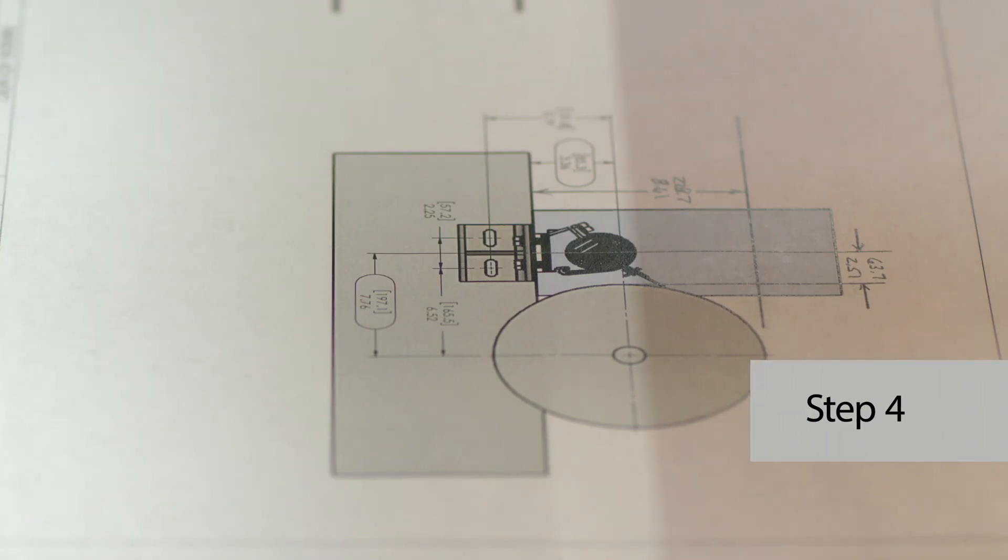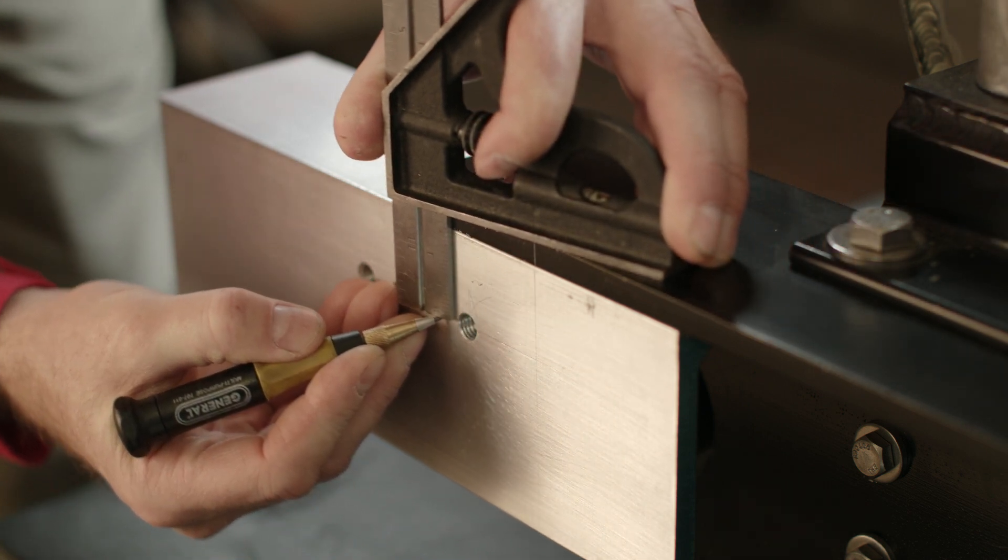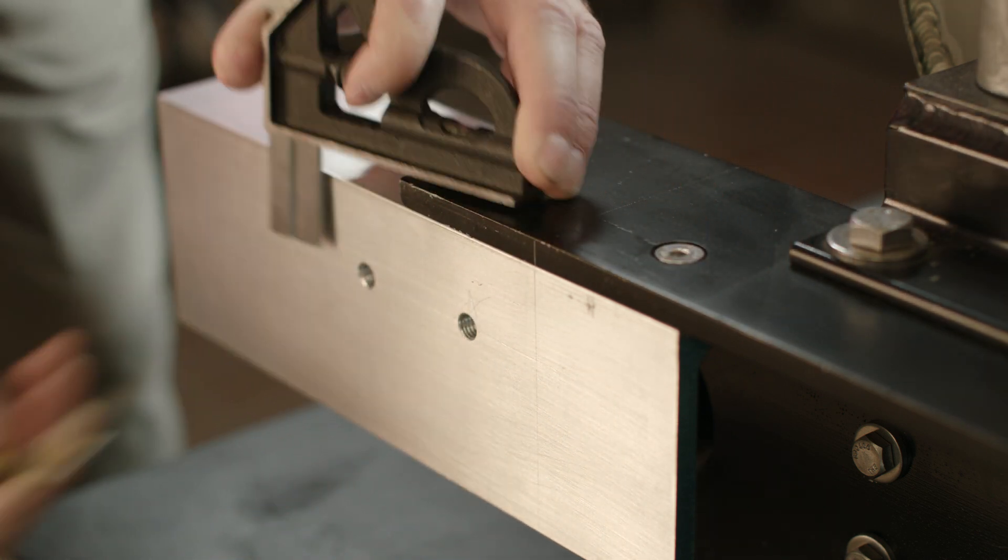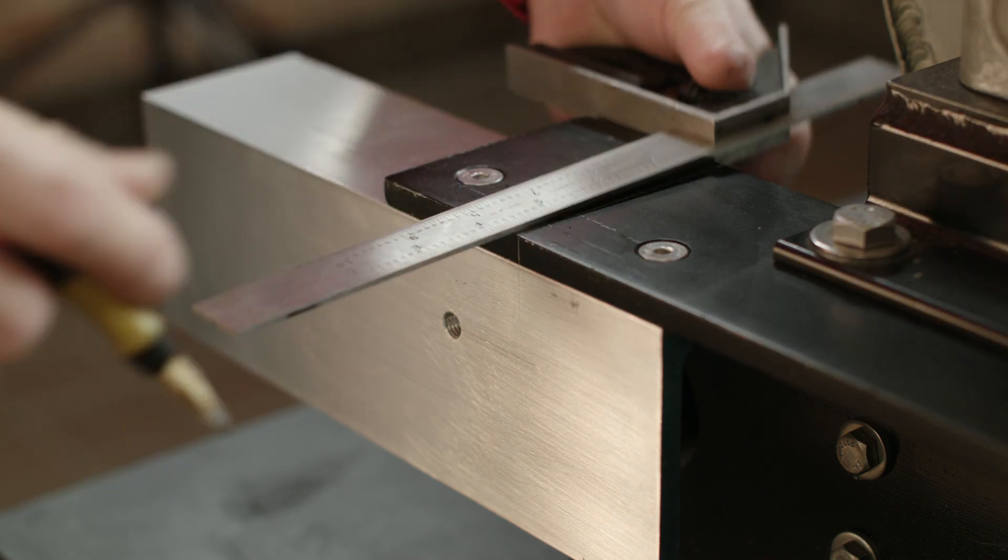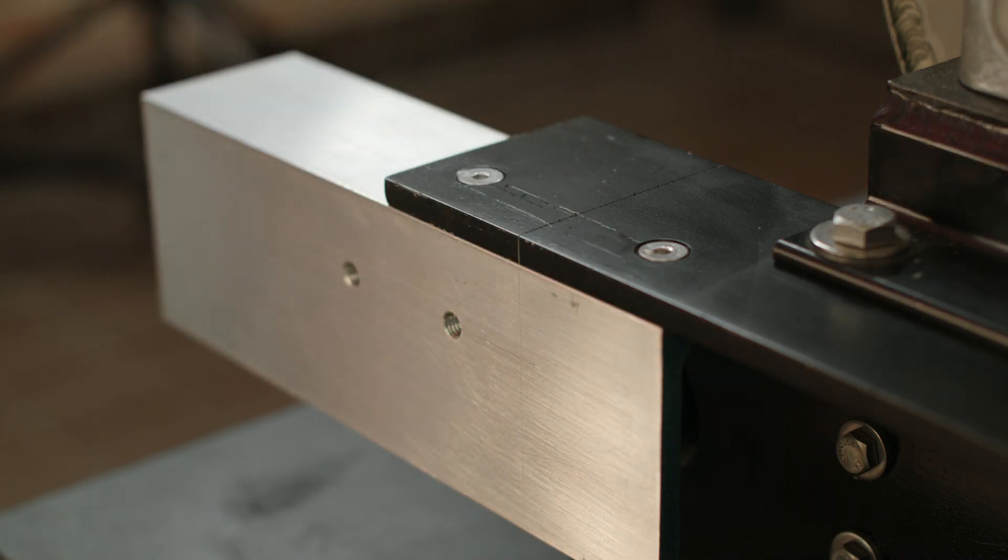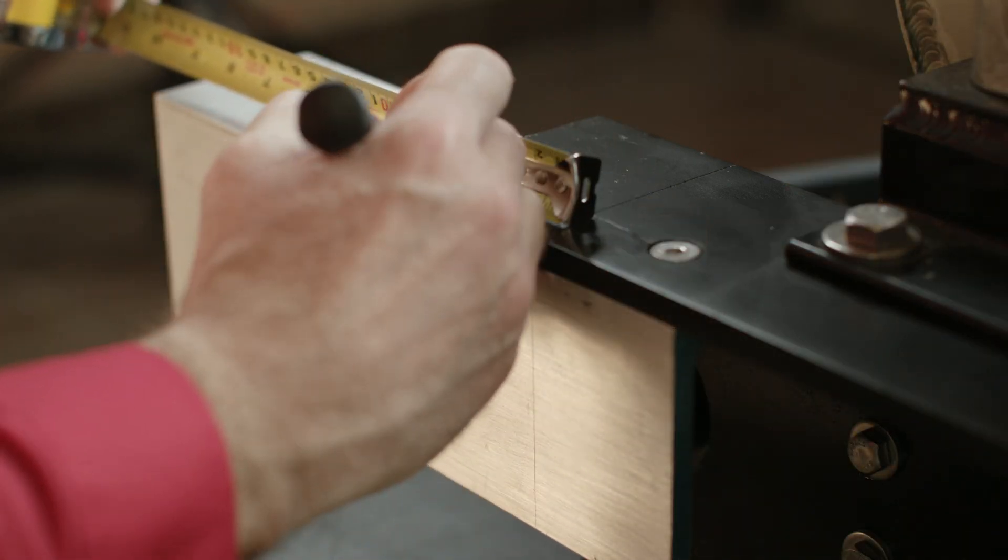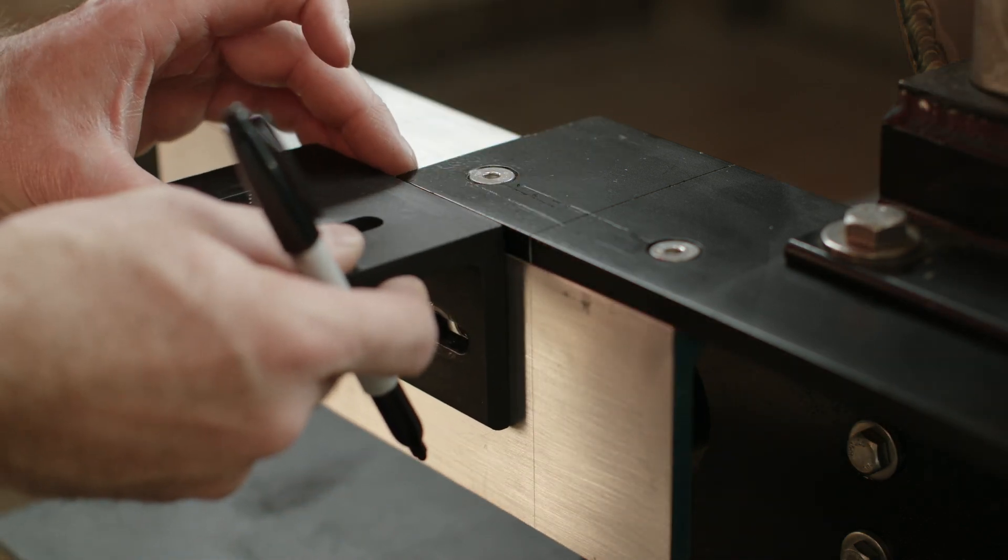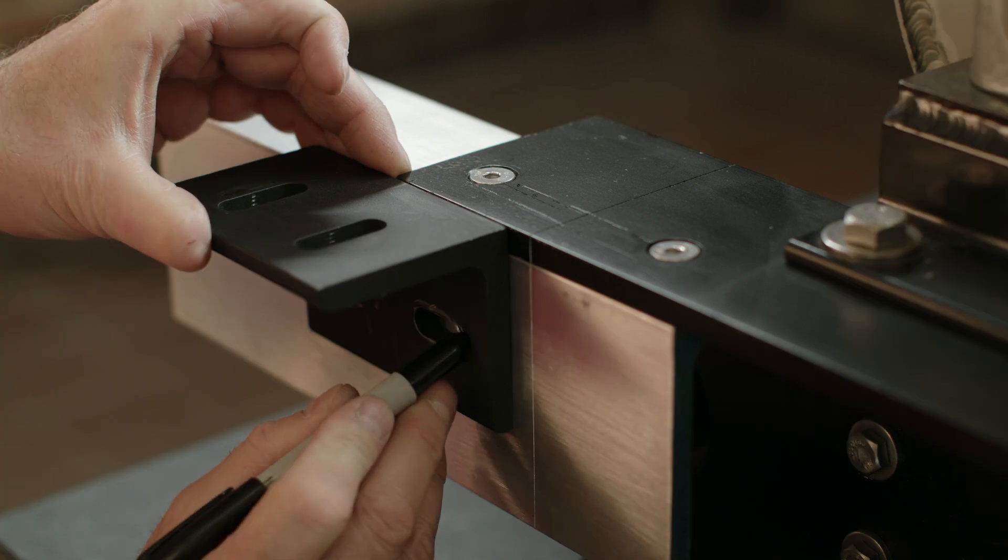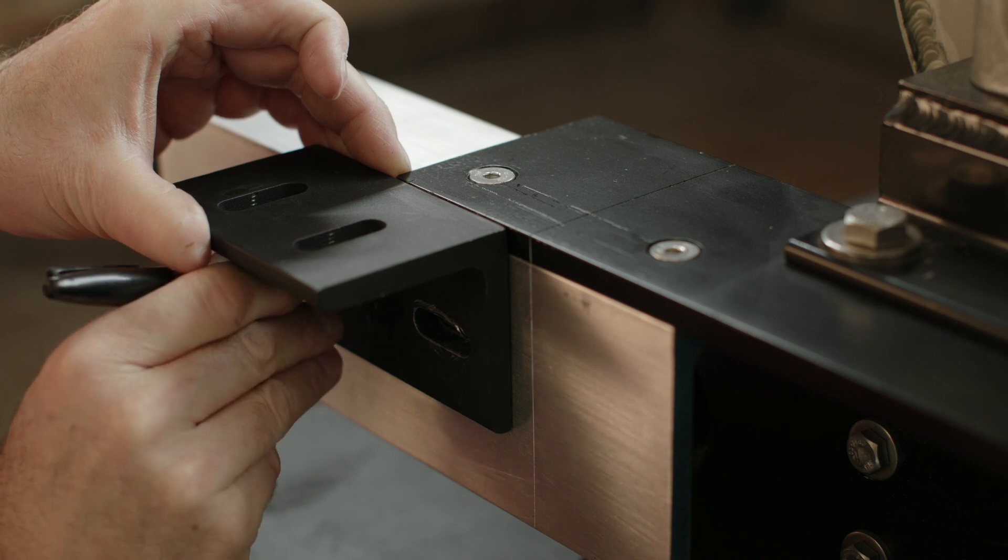Step four, refer to the installation drawing supplied with your Verilite to find the bracket location relative to the roll tangent lines you've just laid out. Scribe the bracket location onto the machine frame. With the bracket located, you may wish to use it as a template to locate the bracket mounting holes. If you get the bracket locations right, it will make the rest of the installation easier.